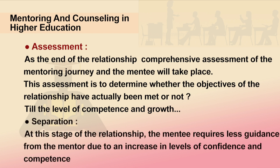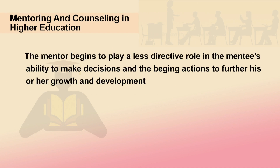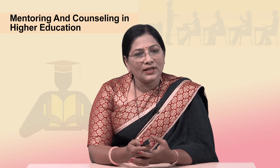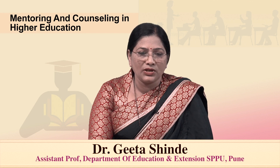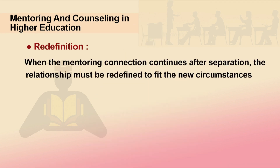The next stage is Separation. In this stage, the relationship between the mentor and mentee requires less guidance from the mentor, due to an increase in the level of confidence and competence. The mentor begins to play a less directive role as the mentee's ability to make decisions and take action to further their growth and development improves. Re-definition is the point where, when the mentoring connection continues after separation, the relationship must be redefined to fit the new circumstances.